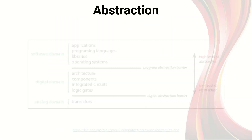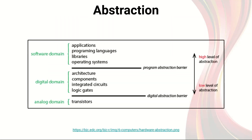First, let's talk about abstraction. Abstraction is something that hides irrelevant information. This definition might sound totally impractical, so let me demonstrate what abstraction does with a simple analogy.